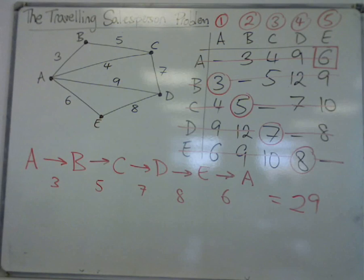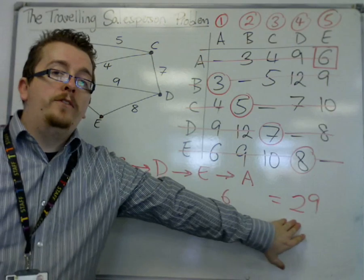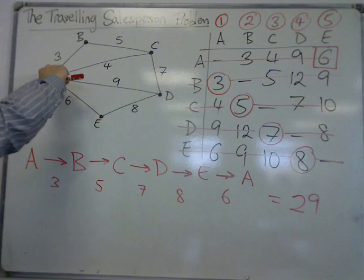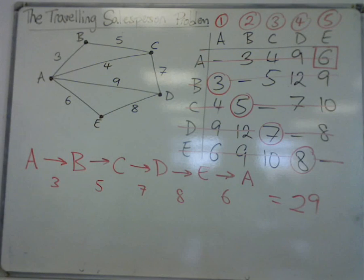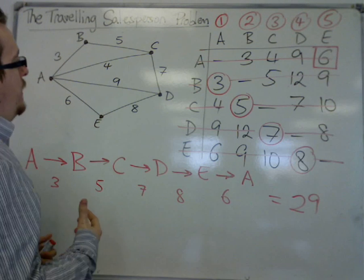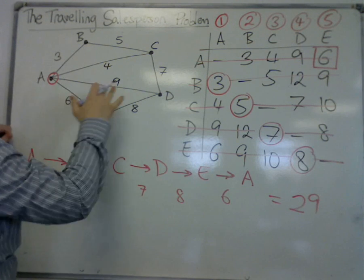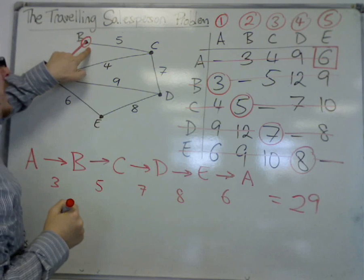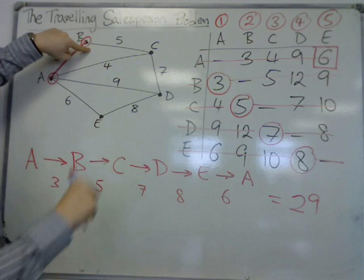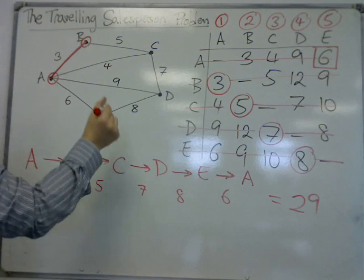So the nearest neighbour algorithm gives me exactly the same route, exactly the same tour, as I found when I just had a guess, which effectively from this graph was just going round the outside. So 29. So this is the nearest neighbour algorithm. And what it does, essentially in describing it, is that you start at your given vertex, you travel the shortest route out of that vertex, and then from B, you're travelling the shortest route out of B to an unconnected vertex, one you haven't gone to before. So it could be C, D, or E. And in this case, it was C.